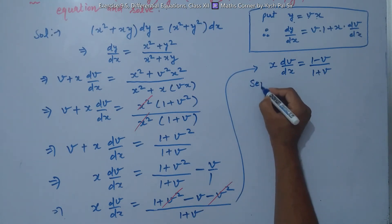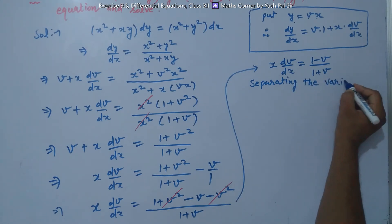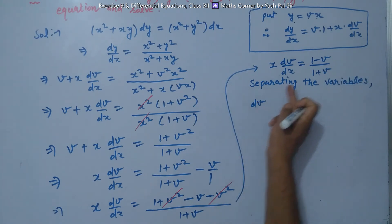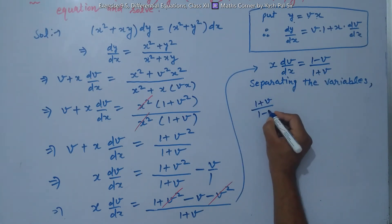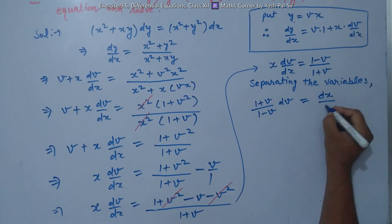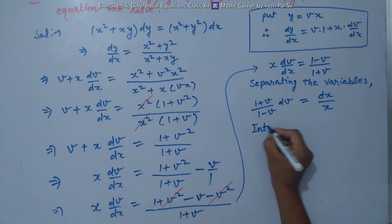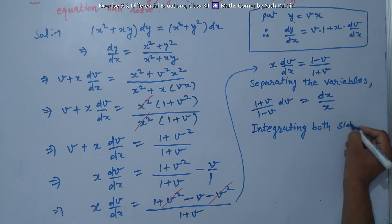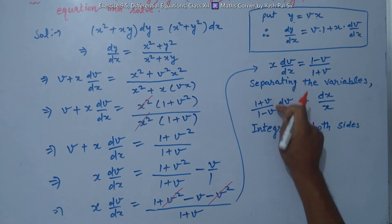Separating the variables: (1 + v)/(1 - v) dv equals dx/x. Since the power of v in the numerator equals the denominator, this is an improper fraction. Dividing: (1 + v)/(1 - v) equals minus 1 plus 2/(1 - v). So the integral becomes the integral of (minus 1 plus 2/(1 - v)) dv equals integral of dx/x.